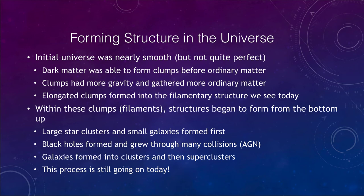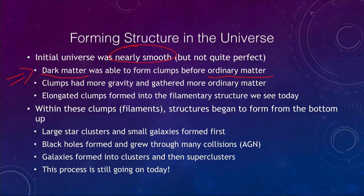So how did this structure form? The initial universe was very smooth - not perfectly smooth, but almost uniformly spread out - and we see that in the background radiation today. However, early on, even when the universe was pretty smooth in ordinary matter, dark matter was able to form clumps. These clumps had more gravity and gathered more ordinary matter and dark matter into them. Eventually these elongated clumps would form the filamentary structures we see in the universe today.